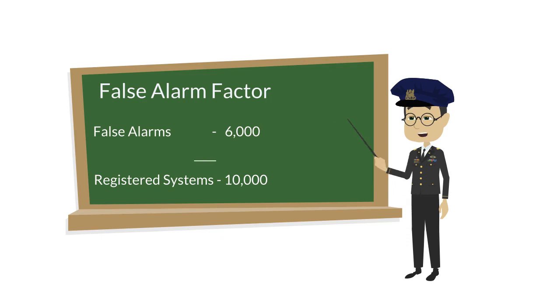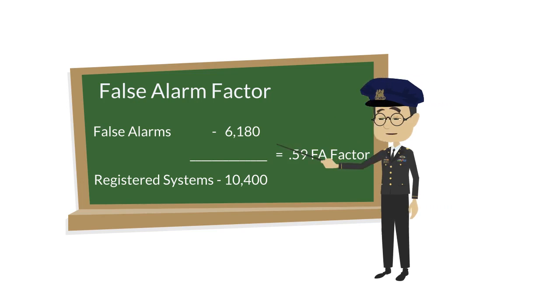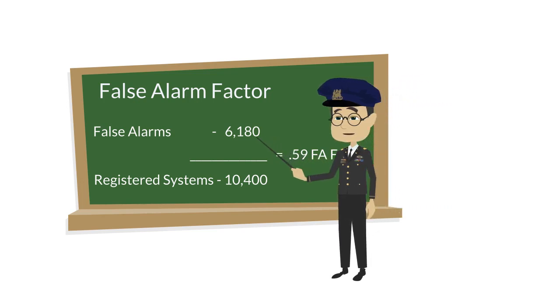Shown here are our estimated numbers from our first year. As you can see, we had a False Alarm Factor of 0.6. Here are our numbers from the following year. Just as we've seen in the past, the number of false alarms actually increased.